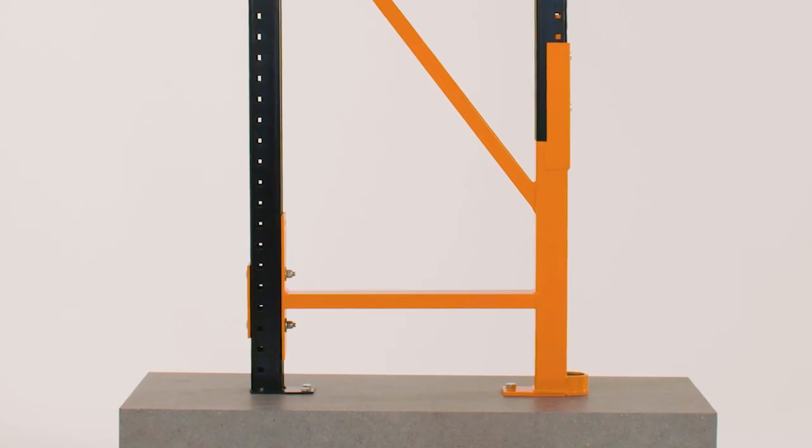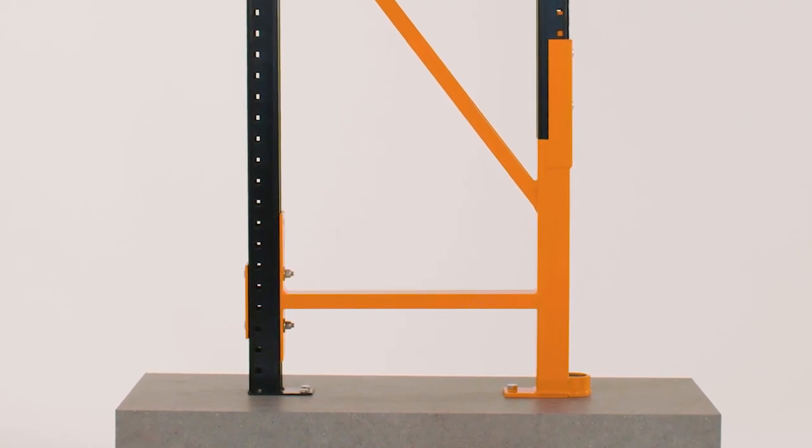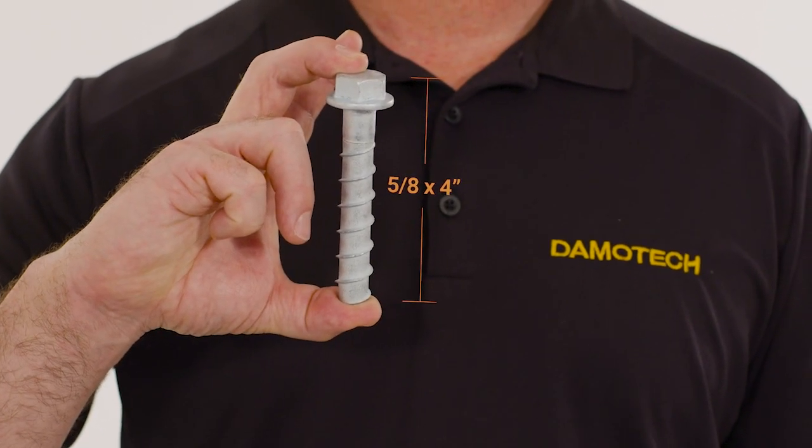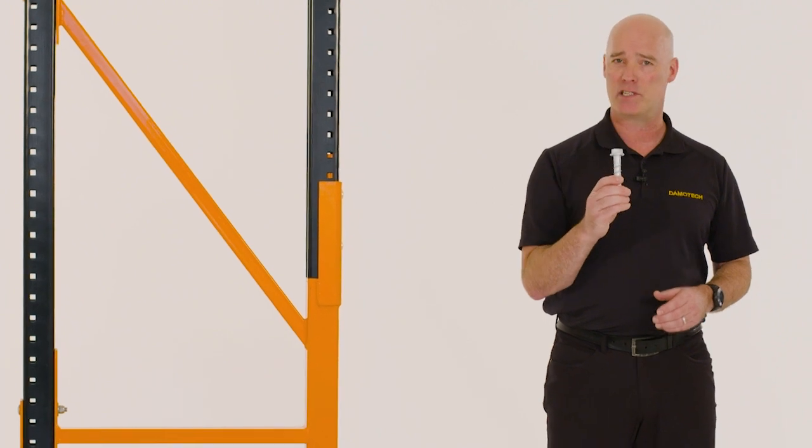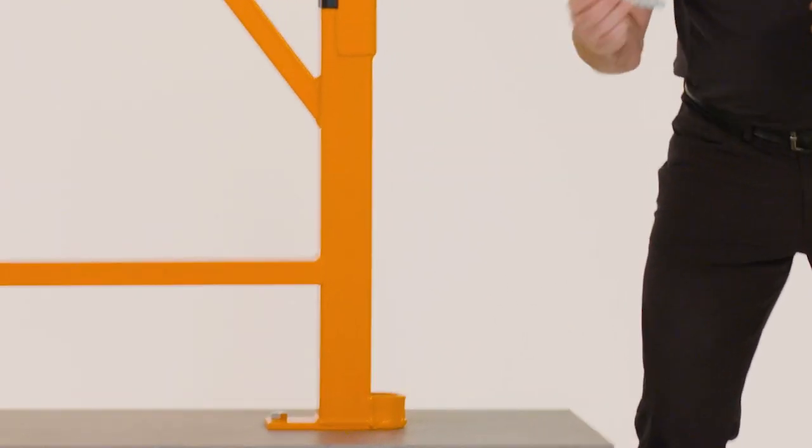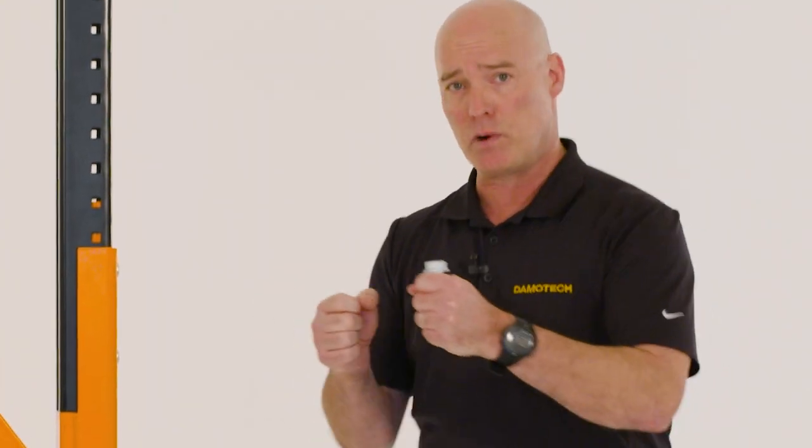You mentioned that it was anchored to the ground. How exactly is it anchored? So we use one of these. This is a Hilti high shearing anchor, 5 eighths by 4 inches deep. We put one of these in the bullnose over here and another one in the back to prevent rotation in case of impact.